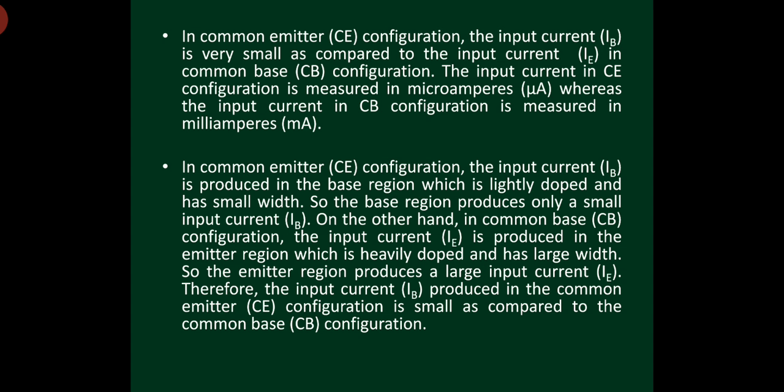In common emitter configuration, input current is produced in the base region, which is lightly doped and has small width, producing only a small current IB in the microamp order. In common base configuration, the input current IE is produced in the emitter region, which is heavily doped and has large width, so the emitter region produces a large input current IE. Therefore, input current IB in common emitter configuration is small compared to the input current of common base configuration.